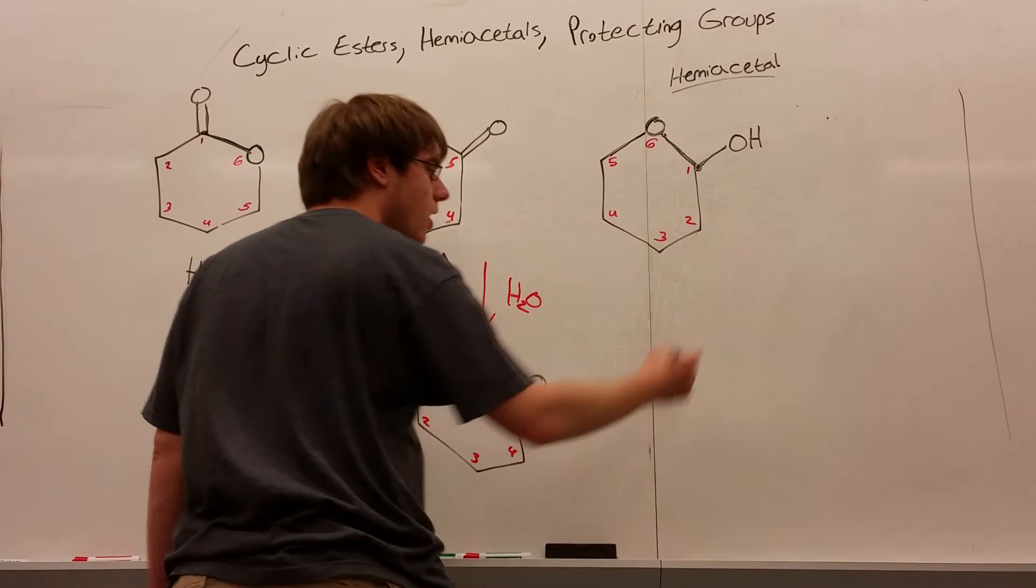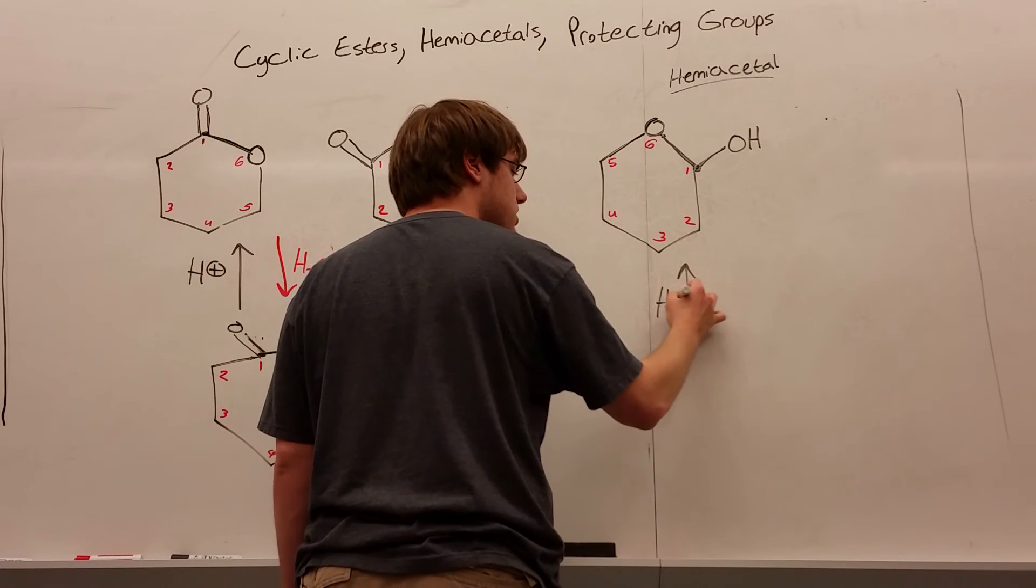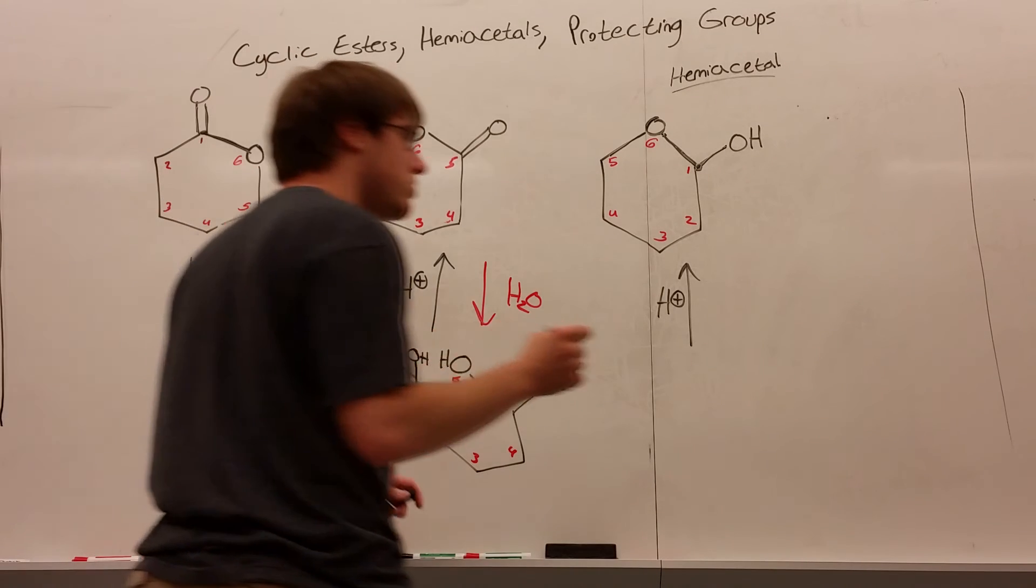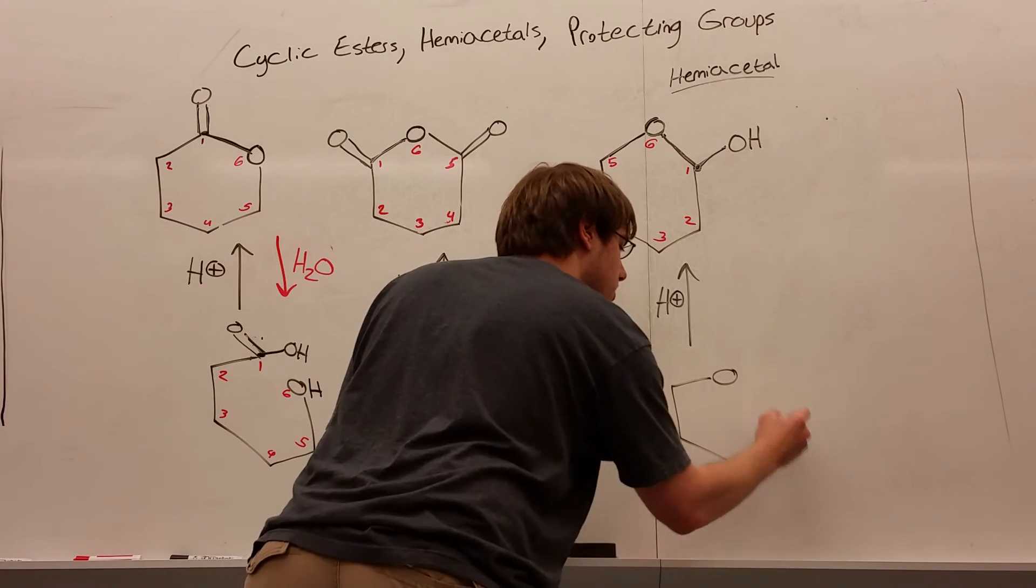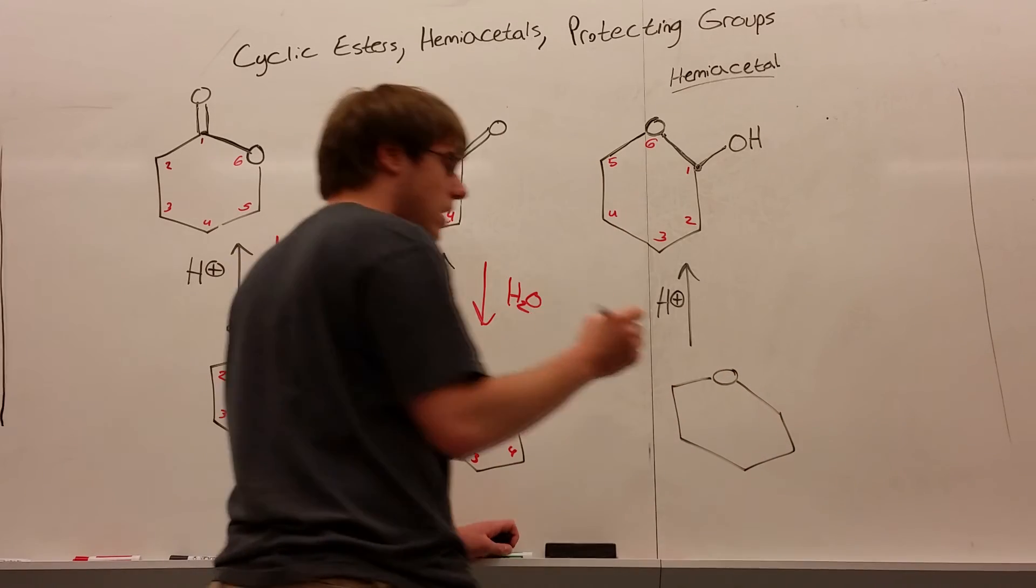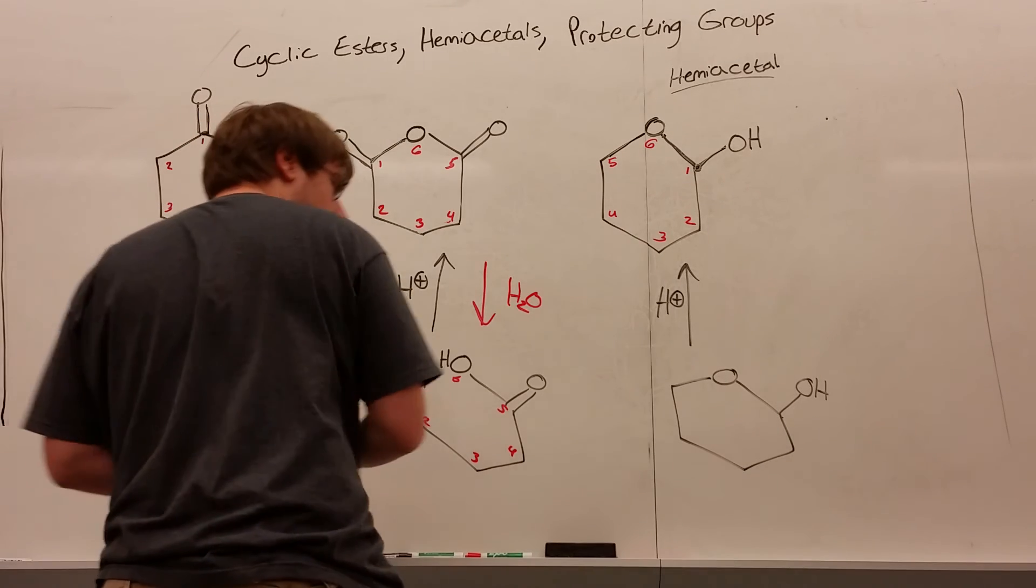Now how do we break this apart? Going backwards. Well, once again, over the arrow you're going to have H+. And what you go back to, well once again, we're going to draw everything exactly the same. So I have a six-membered ring, and now I have an OH over here. And let's number our carbons again.